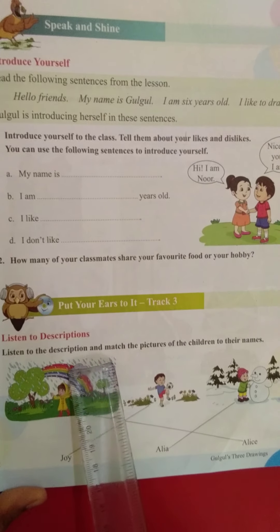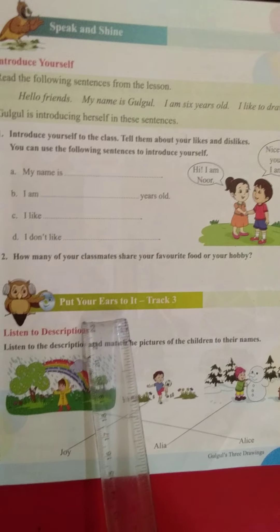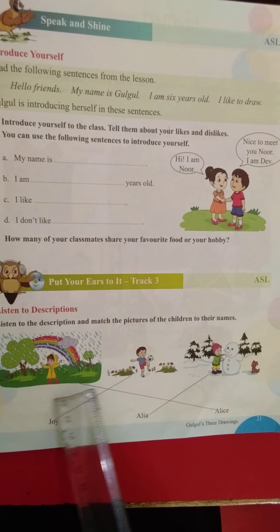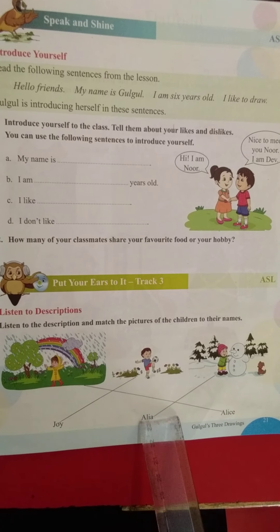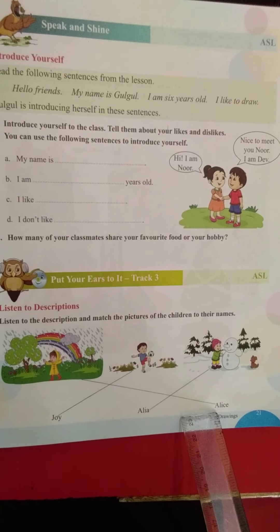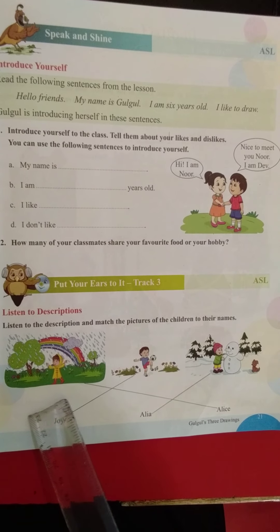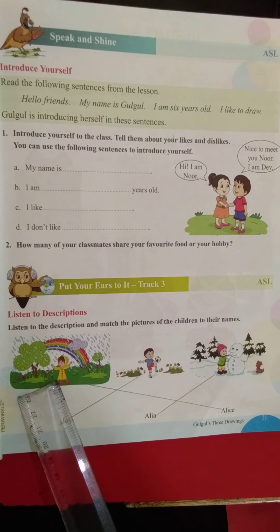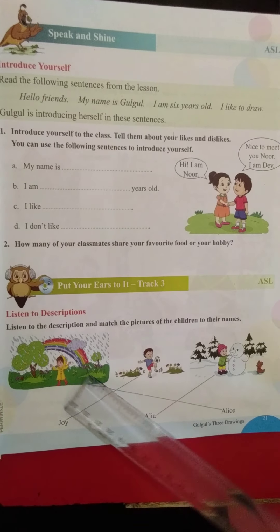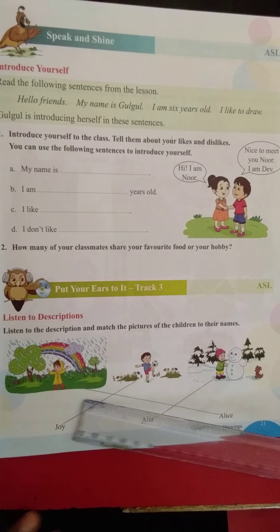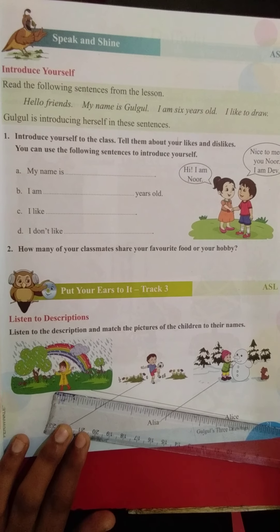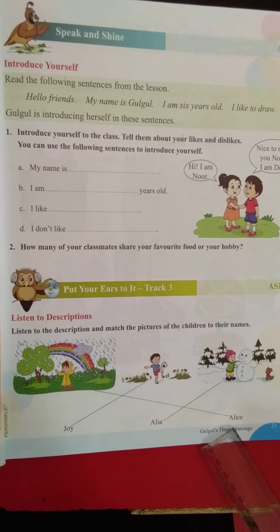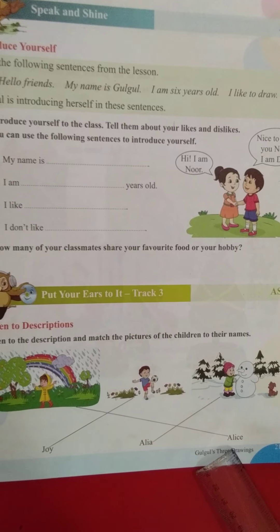Then we have the next activity: put your ears to its track. Now I am going to tell you how to match this. Alice is a girl wearing a raincoat, so where is that raincoat drawing? Here. Alice is wearing a raincoat, so you have to match to Alice. The spelling of Alice is A-L-I-C-E.